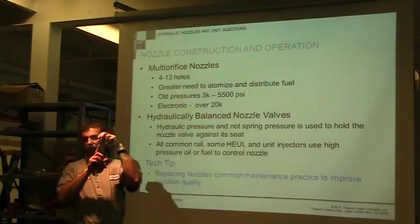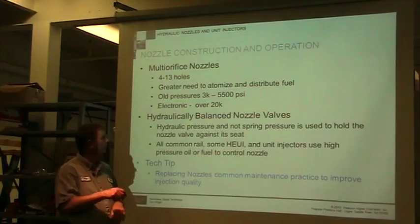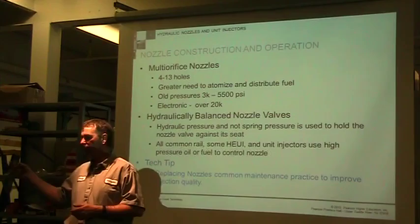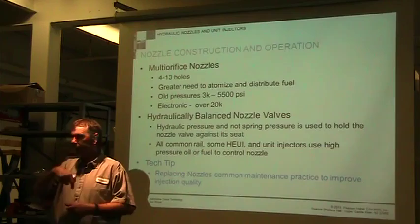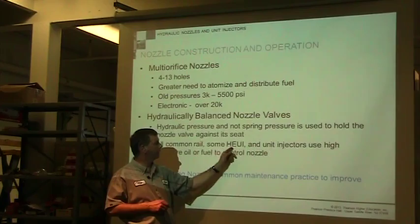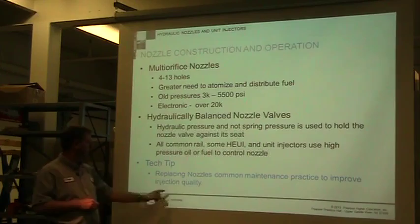Hydraulically balanced nozzle valves: the first generation used fuel pressure pushing against a spring to balance the needle. Then they moved to hydraulic pressure — not spring pressure — to hold the nozzle against its seat. We may use high pressure above the needle pushing it down, or we may use engine oil with its pressure jacked up to control it, or we may use diesel fuel to pressurize and hold it down. All common rail and some HEUI and other unit injectors use high-pressure oil or fuel.